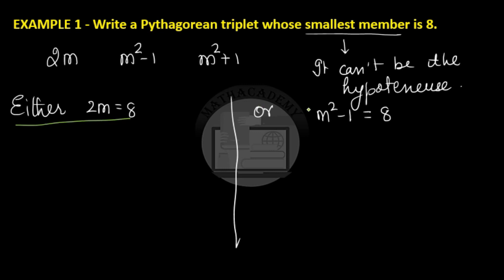We will be seeing both of these scenarios. So when 2m = 8, m comes as 4. So we can find out all three: m² - 1 will be 4² - 1 which is 16 - 1 which is 15 and m² + 1 will be 4² + 1 which is equal to 17. So our Pythagorean triplet is 2m, m² - 1 and m² + 1. So we get 2m as 8, 8, 15 and 17.